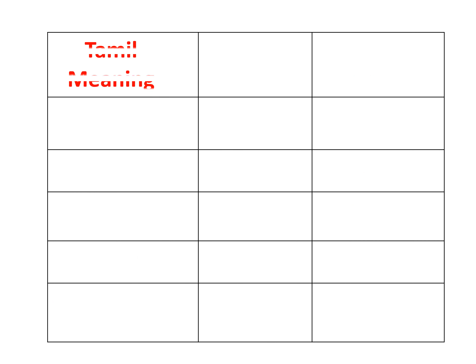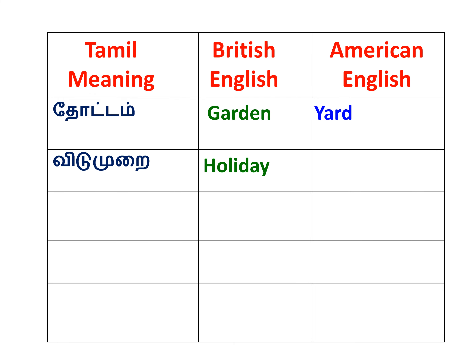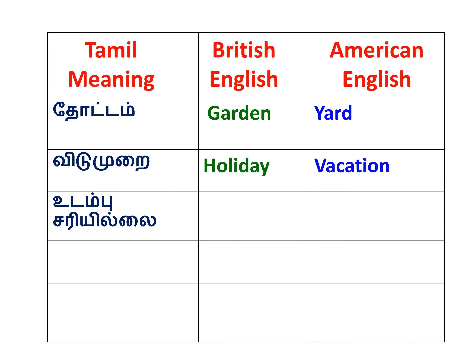Next word is Garden — British English is Garden. American English is Yard. Next word is Holiday — British English is Holiday. American English is Vacation. Next word meaning unwell — British English is Ill. American English is Sick.